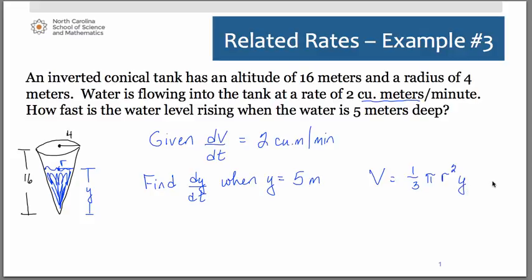So the difficulty is if we were to leave this as it is and do the implicit differentiation we would end up doing product rule because we have two variables.